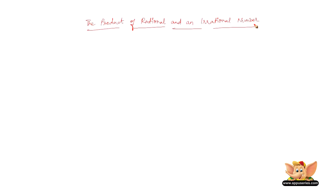In this video, let us learn the product of a rational and an irrational number. Let's take an example: find the product of 2 and root 2. The answer to this will be 2 root 2.